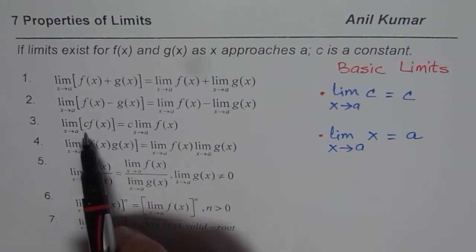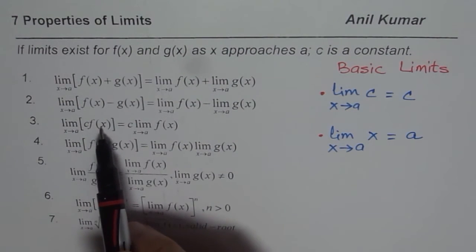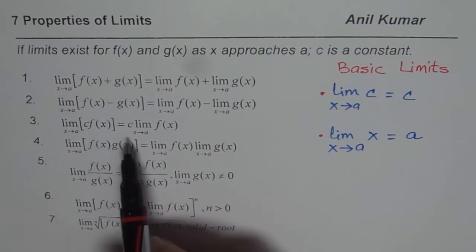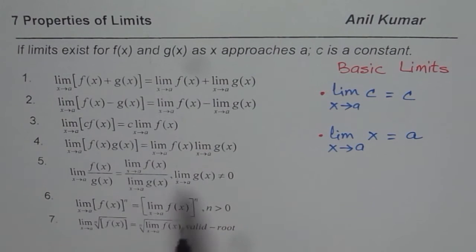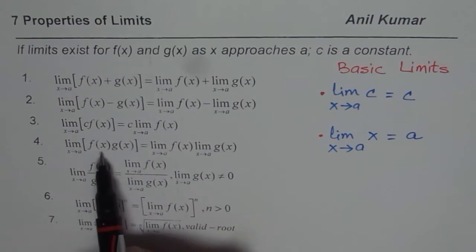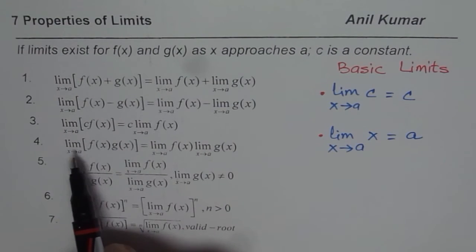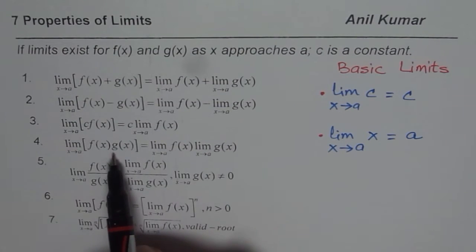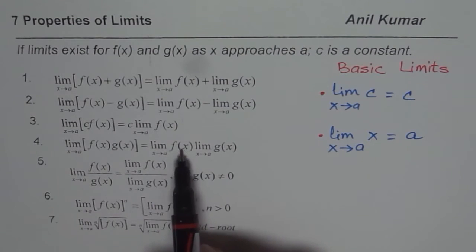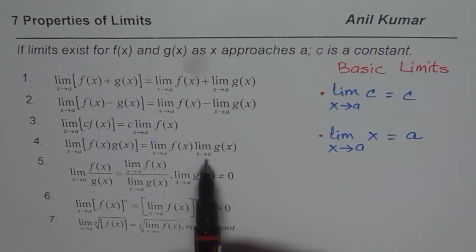The third one is that if you multiply the function by a constant, the limit of constant times the function equals the limit of the function times the constant. In this case, the limit of the product of functions is the product of their individual limits as x approaches a.